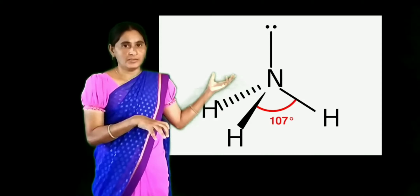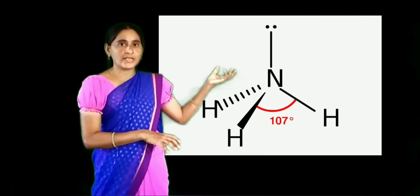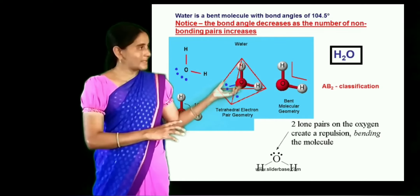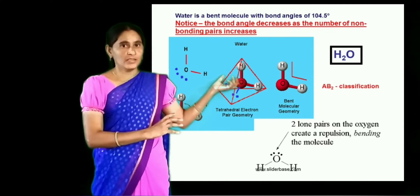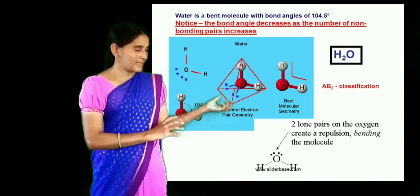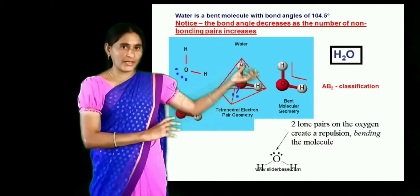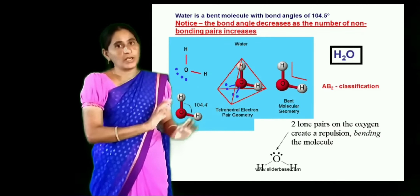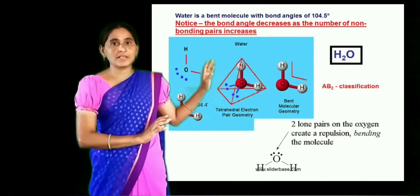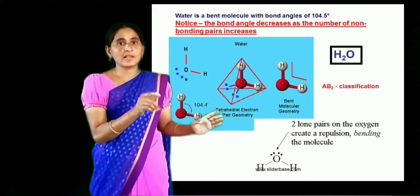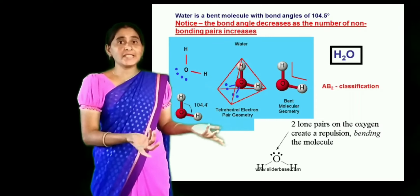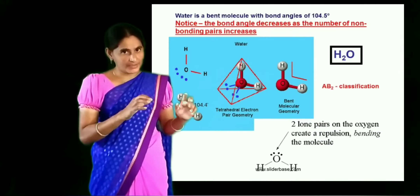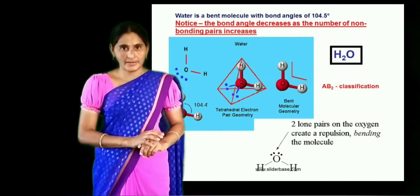Ammonia is expected to be a planar trigonal, but due to this repulsion it will change its structure to a pyramidal structure. The same can be expected in water. In water, the central atom is oxygen with atomic number 8 and configuration 1s2, 2s2, 2p4. It has 2 unpaired electrons in its 2p orbital that involve in bond formation with 2 hydrogens. The 2 electrons in 2s and 2px will remain as lone pairs. More repulsion is present between one lone pair and another lone pair, so its bond angle becomes very less — 104 degrees and 31 minutes.